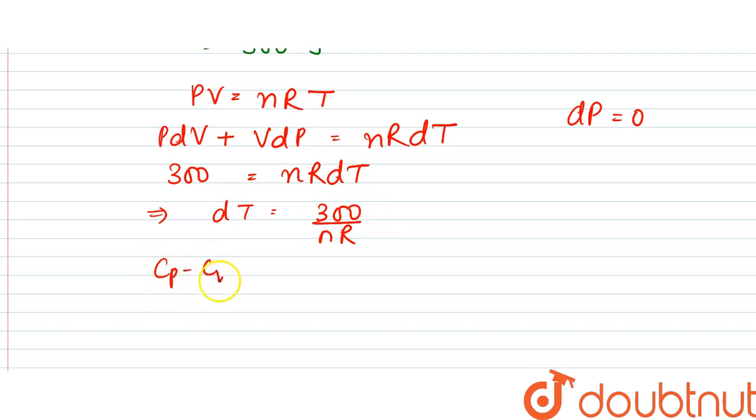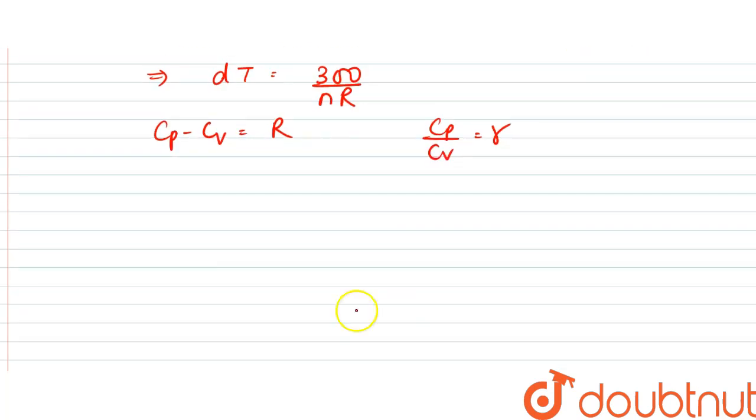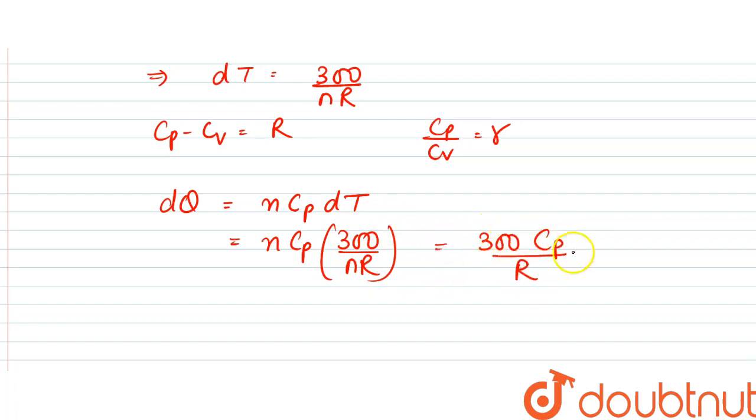Since we know that Cp minus Cv is equal to R, and Cp by Cv is nothing but gamma, the heat dQ is equal to n Cp dT. So from here we can write n Cp dT is 300 by nR. This would be equal to 300 Cp by R.